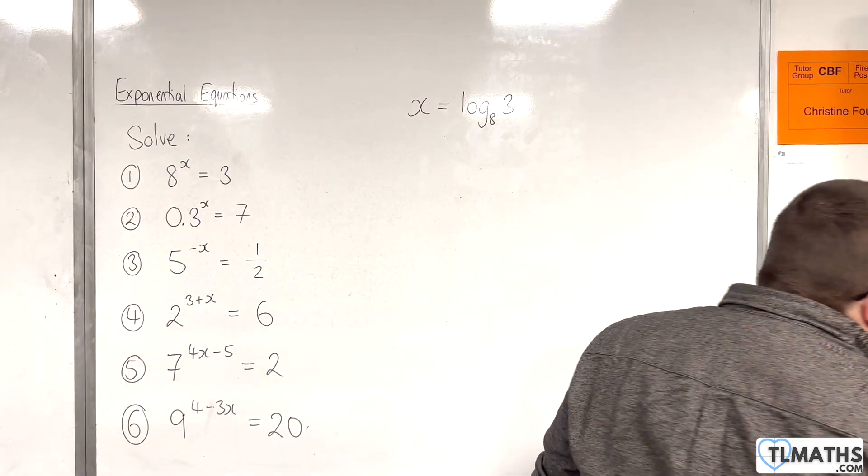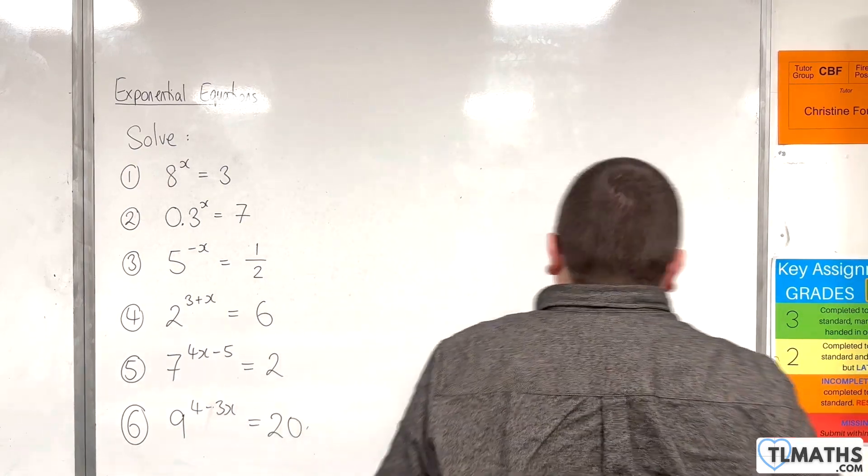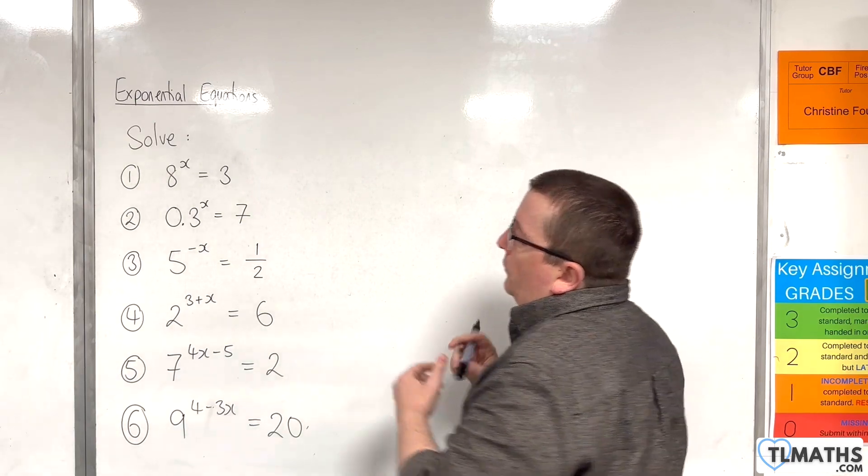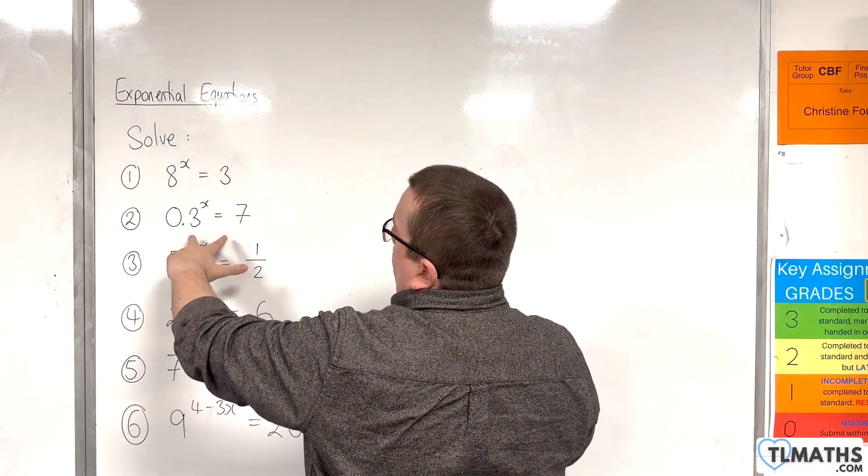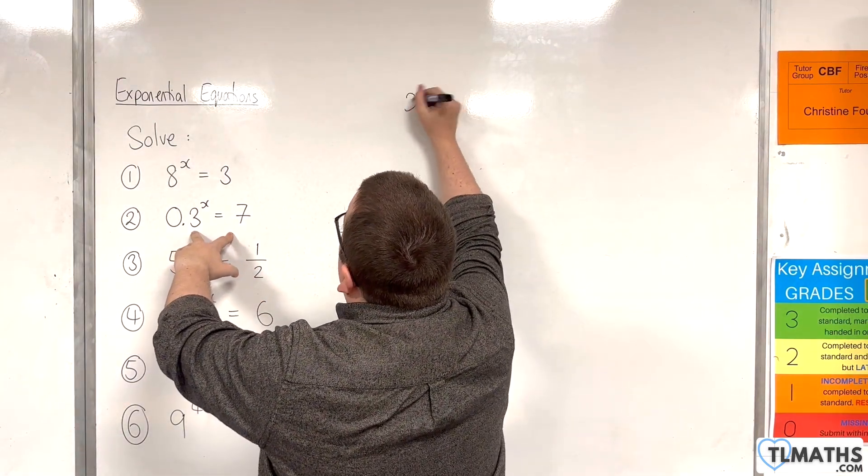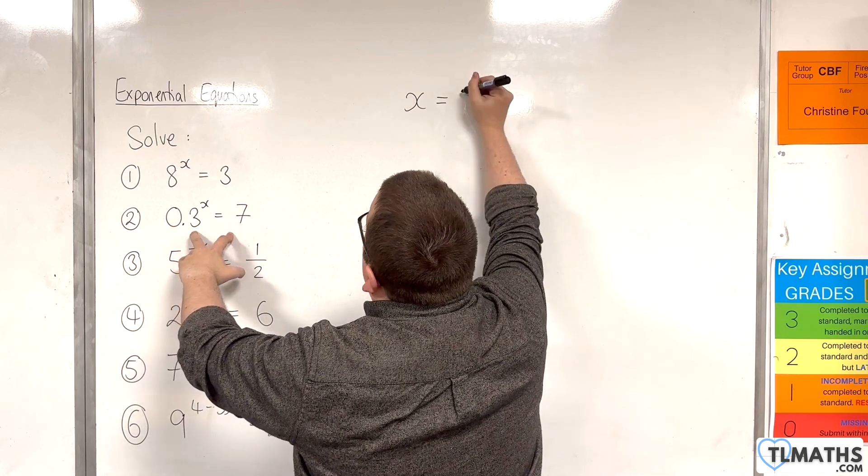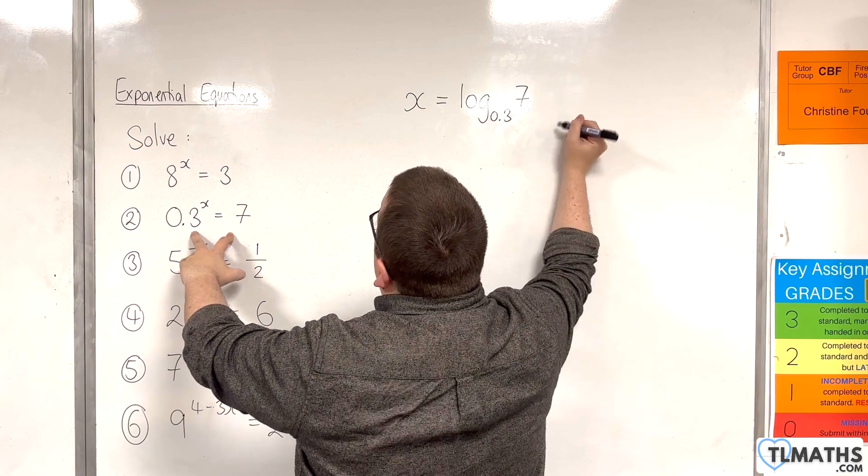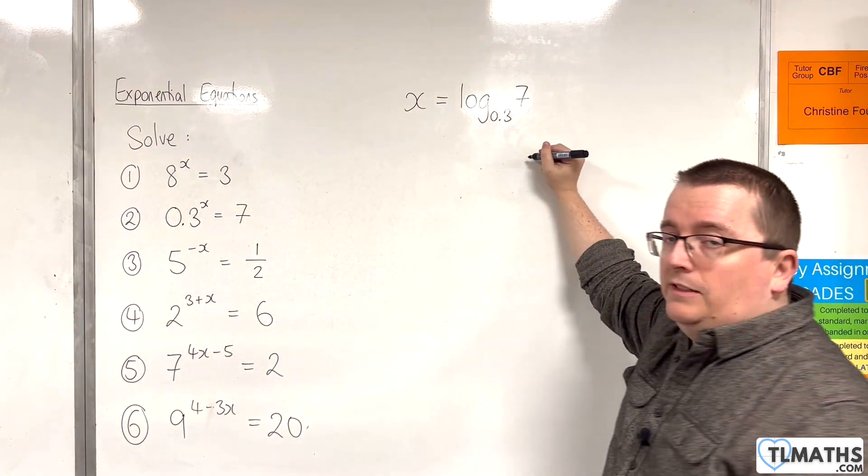We can do it in one line. Number 2, 0.3 to the power of x is equal to 7. Again, this is in exponential form, so write that in logarithmic form. That would be x is equal to log base 0.3 of 7. And that's the exact answer.